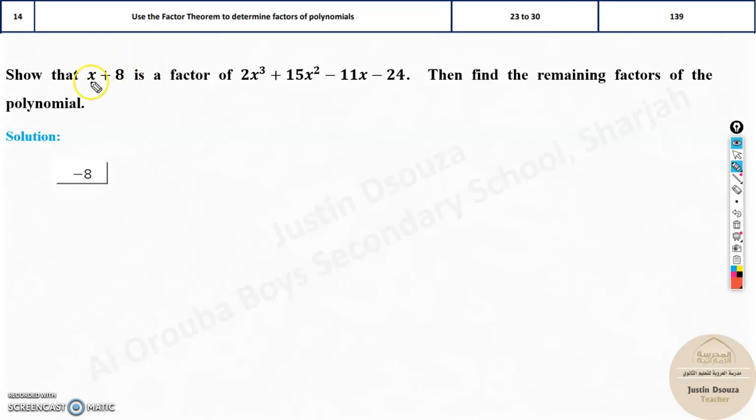So in synthetic division, whatever is the value you need to take the opposite sign of x. Basically, what is x + 8? We need to equate it to 0, so x is equal to minus 8. So take that minus 8 value over here and divide. We don't put the variables, just the coefficients. We have to write 2, 15, minus 11, and minus 24.